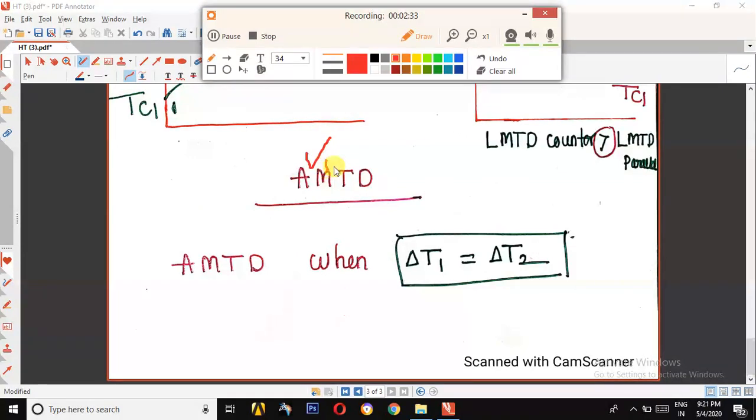Arithmetic Mean Temperature Difference. If we use AMTD instead of LMTD, we will get over estimated values of temperature difference. Therefore, design of heat exchanger will fail. We can use AMTD only when delta T1 is equal to delta T2.